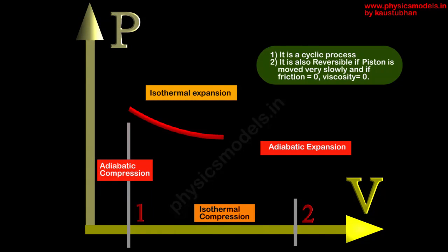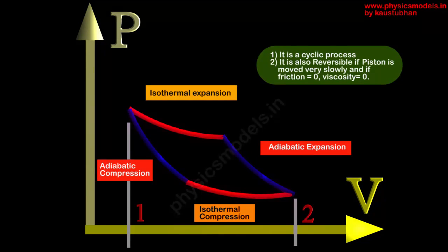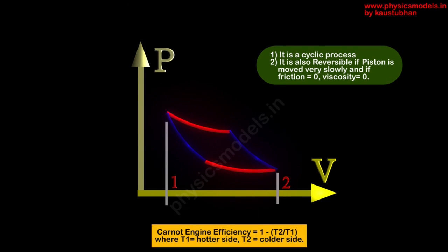While it's obvious that it's a cyclic process because the graph came back to the point from where it started, it's not so obvious that it's also a reversible process. In this case, there is no friction between the piston and cylinder walls and there is no viscosity. The piston moved so very slowly—it's called a quasi-static process because of the very slow movement of the piston.